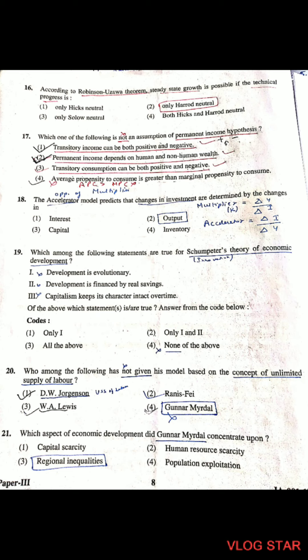Question 17: Which one of the following is NOT an assumption of the permanent income hypothesis? The fourth option is not an assumption — it says average propensity to consume is greater than marginal propensity to consume, which is incorrect. The three correct assumptions are: transitory income can be both positive and negative; permanent income depends on human and non-human wealth; and transitory consumption can be both positive and negative.